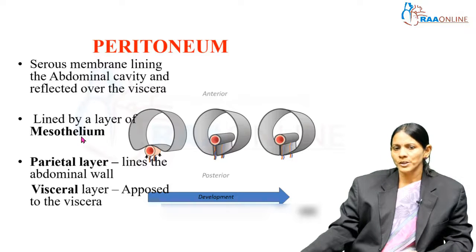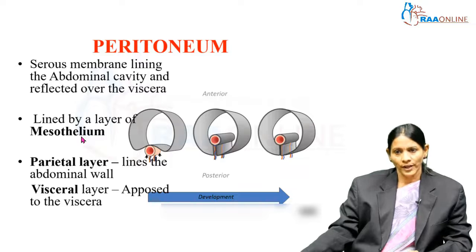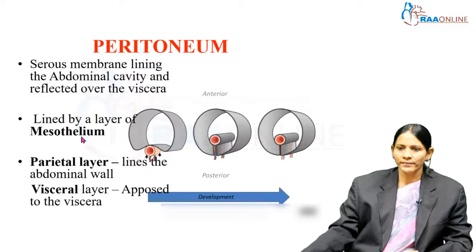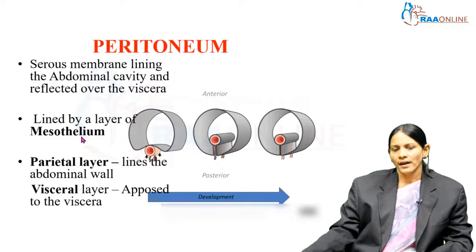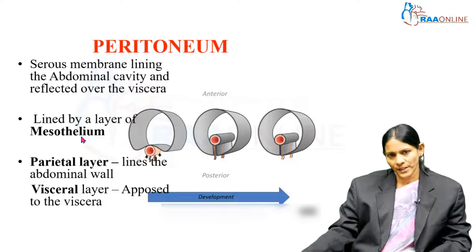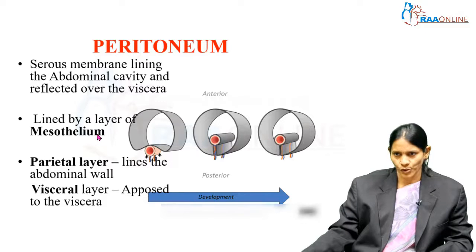Not only do fibroblasts come from the mesothelium, but the sub-mesothelial connective tissue also contains macrophages, fibroblasts, and in some places adipocytes, which are fat cells. The presence of macrophages is important because it contributes to a key function of the peritoneum: helping to control infection through the macrophages present in the sub-mesothelial connective tissue.